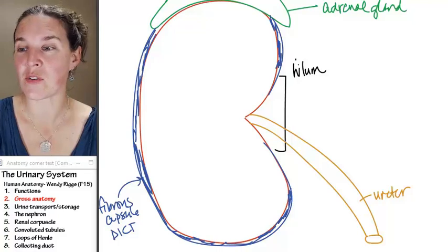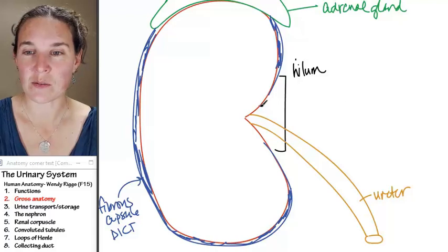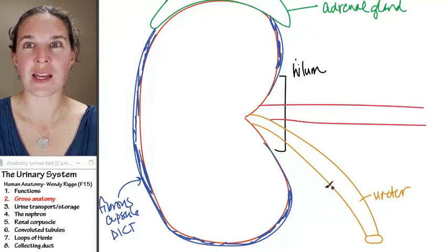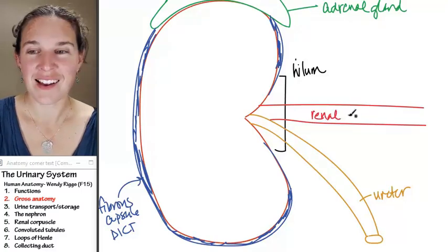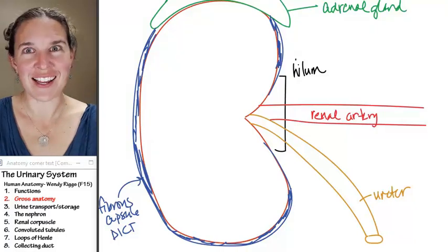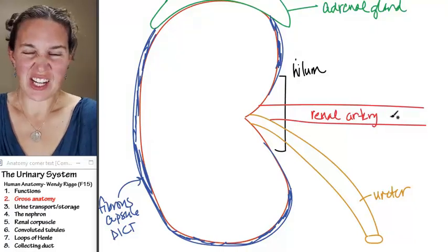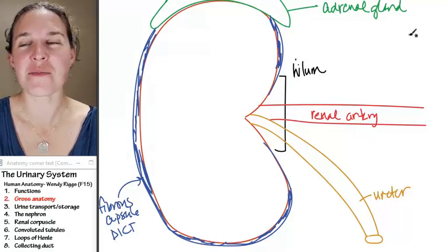I'm going to draw this for you, and then you have to guess what it is. It's my favorite. Whatever could that be? It's the renal something, something you already know. It's the renal artery, and look how huge it is. It's gigantic. It's way bigger than the ureter.